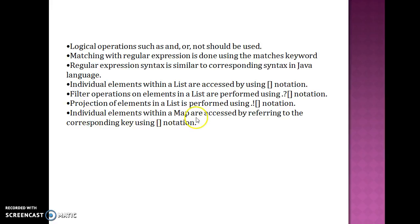Individual elements within the map are accessed by referring to the corresponding key using square bracket notation. So, if you want to retrieve some elements from map using its key, then in square bracket, you need to pass the key of the map. Then you will get the corresponding value.